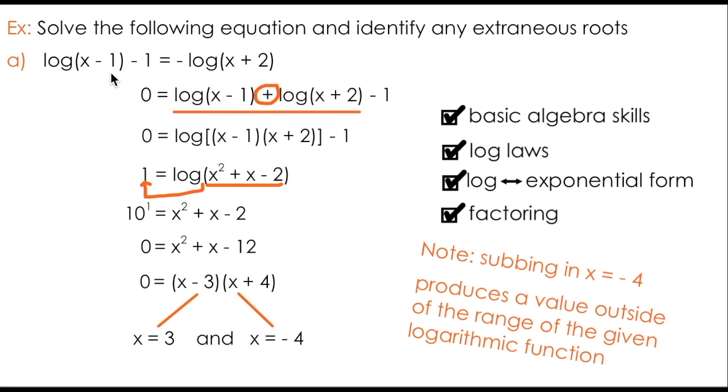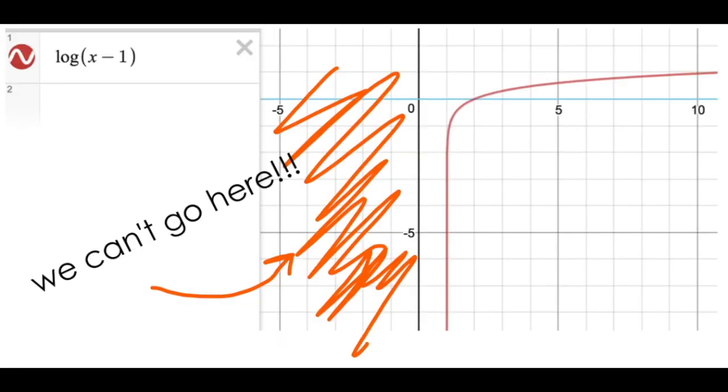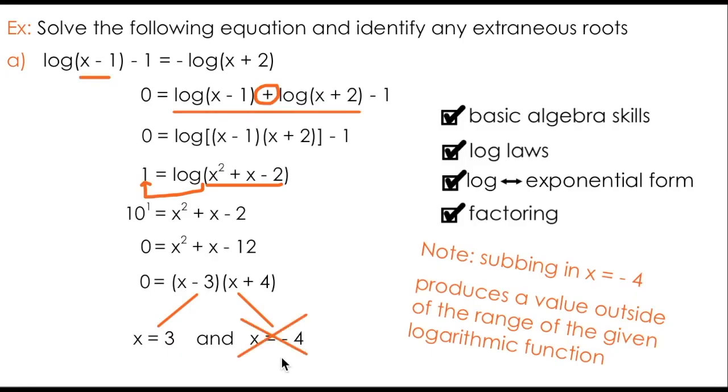However, when I substitute x equals negative 4 into the original equation, I end up taking the log of a negative number, which based on your understanding of logarithmic functions you know is not possible. As a result, we say x equals negative 4 is an extraneous root and cannot be considered a valid solution to this equation.